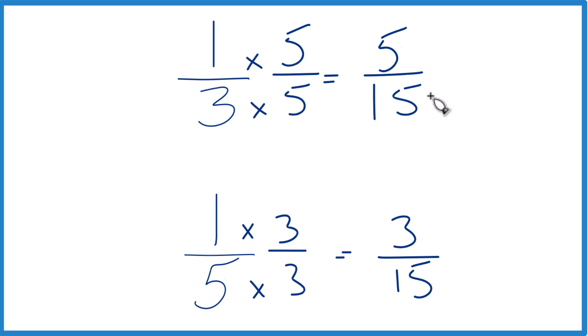And you can tell how much larger. 5/15 minus 3/15, that's 2/15. So, 1/3 is 2/15 larger than 1/5.